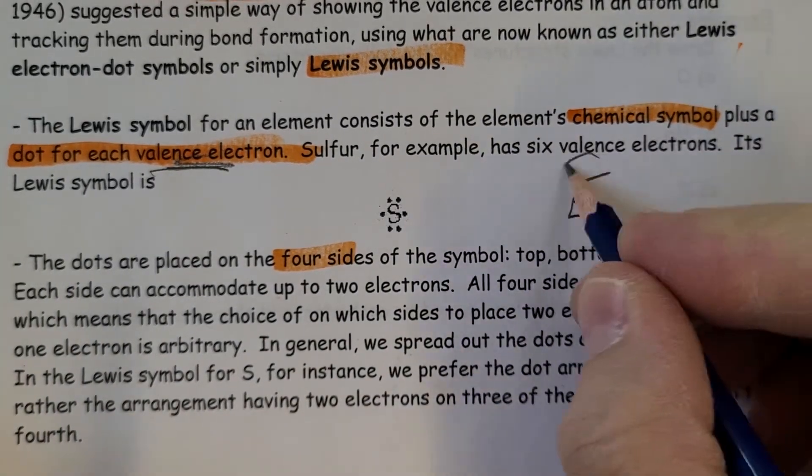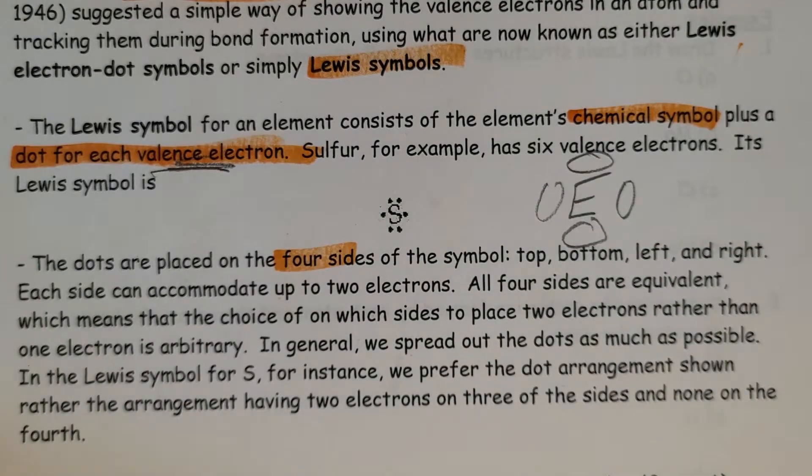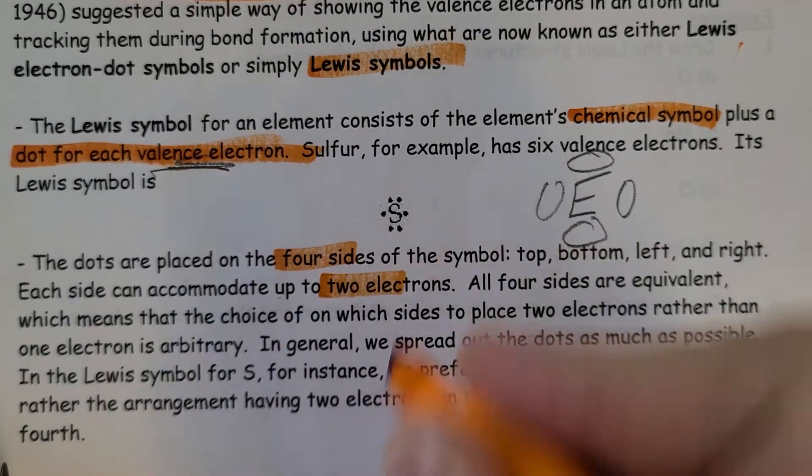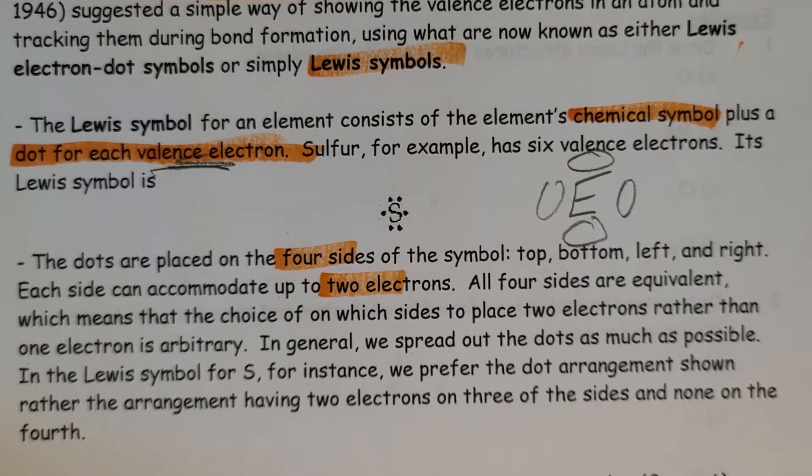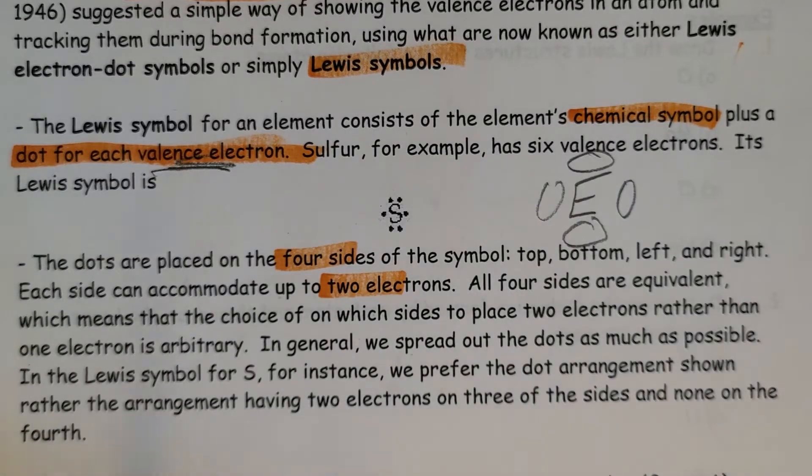The dots are placed on all four sides. We imagine we have our element symbol and we have four areas: above, below, left, and right side. Each side can accommodate up to two electrons. All four sides are equivalent, which means that the choice in which sides to place electrons is arbitrary.